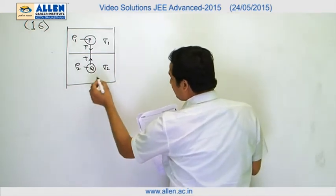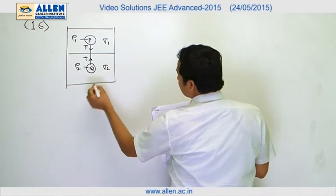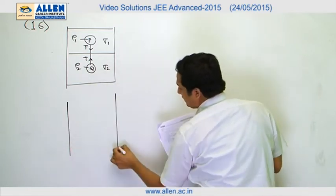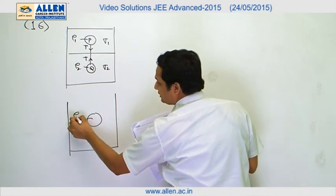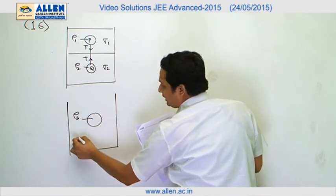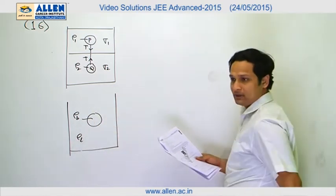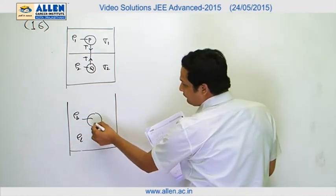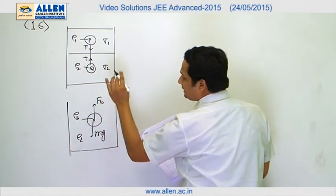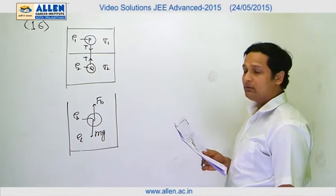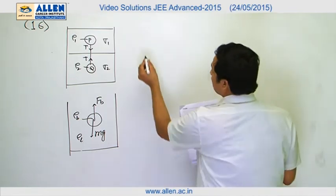So if we take a general case, let us say we have a body of density rho B and liquid of density rho L. Three forces will be acting on it: one will be mg downward.